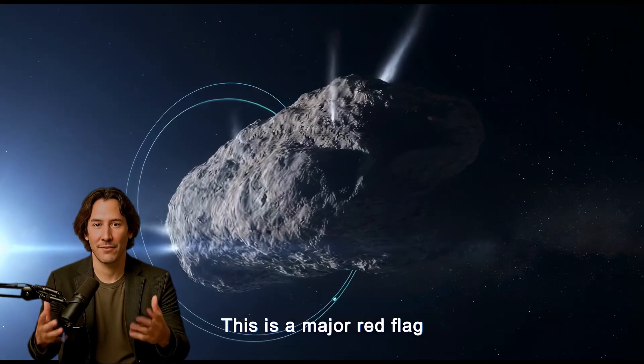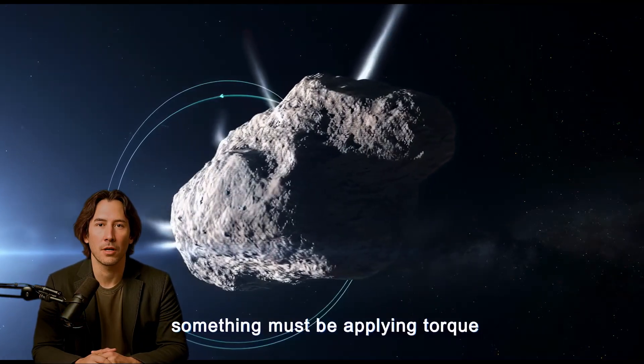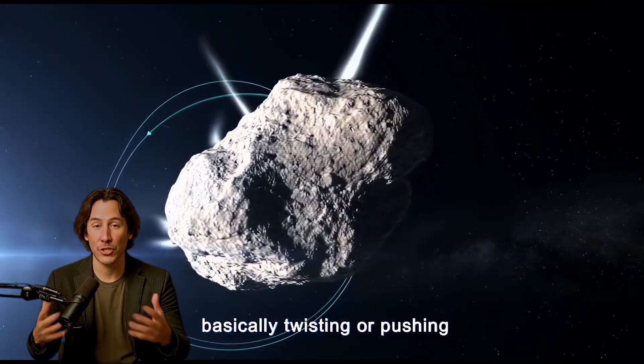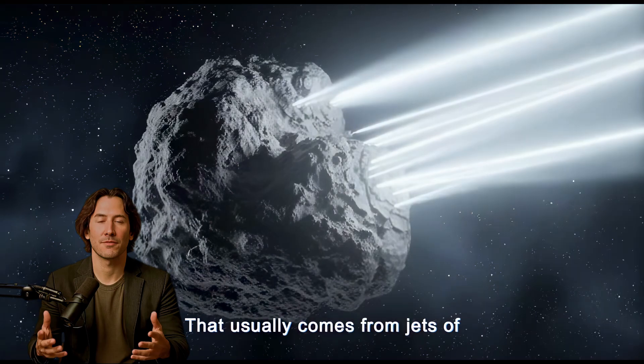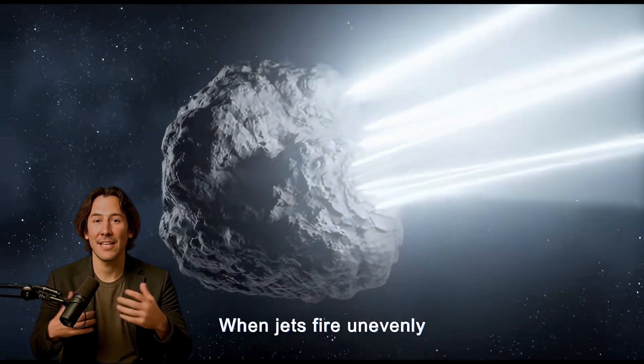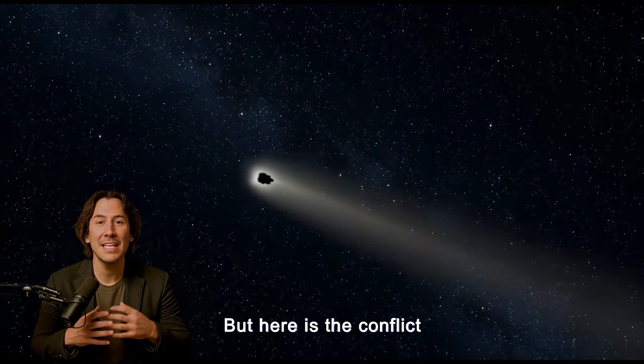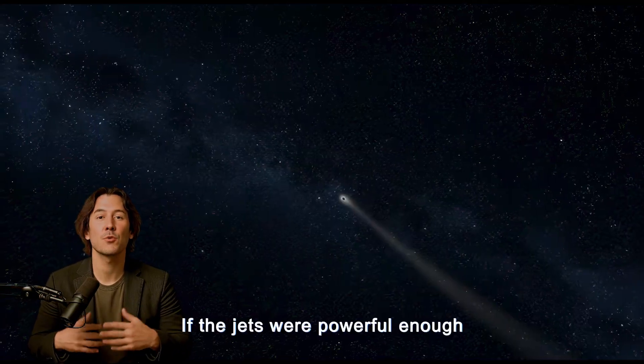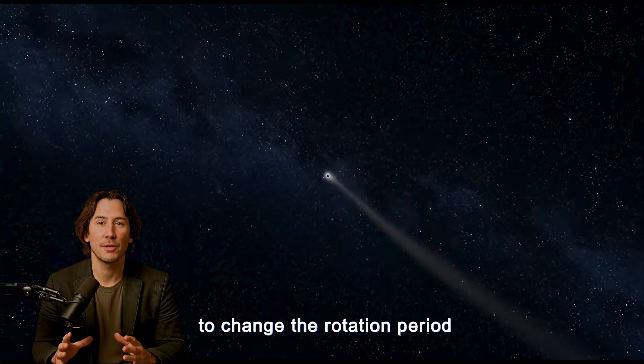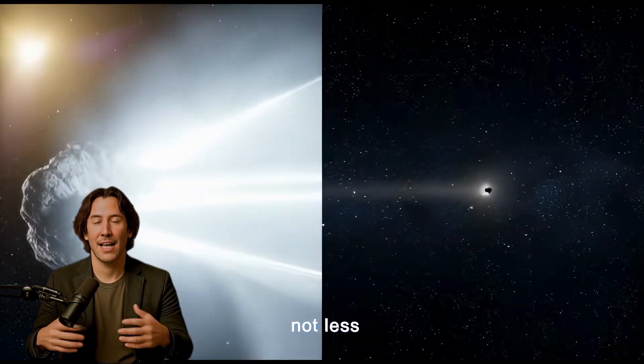This is a major red flag. If a comet slows down, something must be applying torque, basically twisting or pushing on it. That usually comes from jets of gas erupting from the surface. When jets fire unevenly, they can speed up or slow down rotation. But here is the conflict. If the jets were powerful enough to change the rotation period by three hours, then we should have seen more brightness, not less.